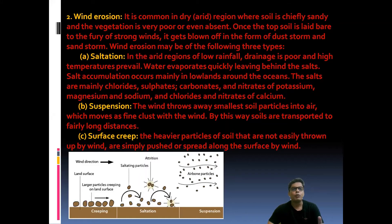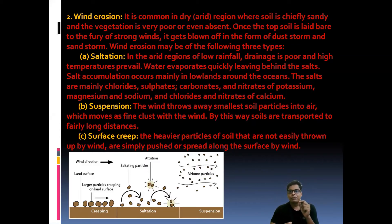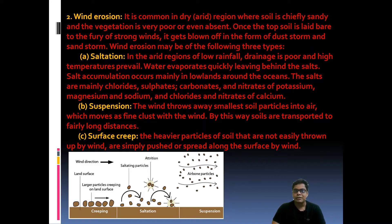Next is wind erosion. Wind also plays a vital role in soil erosion. It is common in dry areas because in dry areas wind can move from one area to another without any obstacle, and vegetation cover is very sparse. Wind carries sediments and silts that act like a blade working on the soil surface.